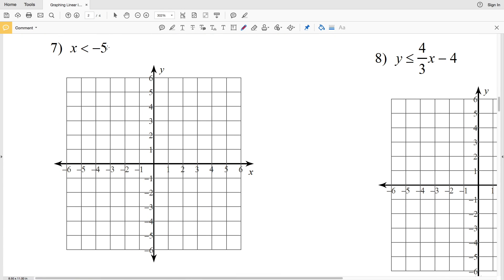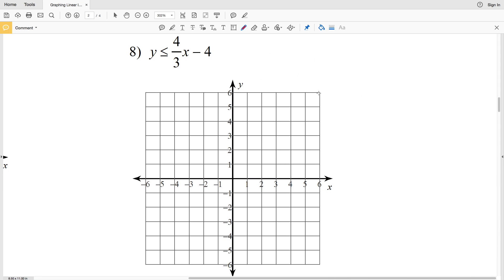Our slope in this case is undefined because it's a vertical line. Regardless of the y values, x is always less than negative 5. So we're going to locate the x equals negative 5 line, but it's going to be dashed since x is less than, not less than or equal to. Go ahead and draw that dashed line and then we're going to shade in to the left since the x values are less than negative 5, so that would be negative 6, negative 7, and so on, regardless of y.